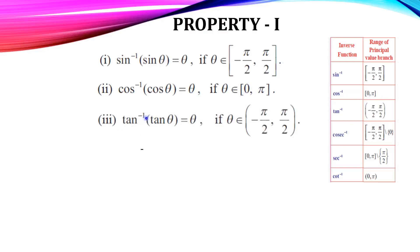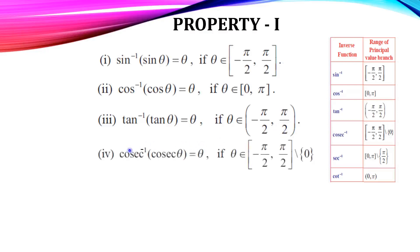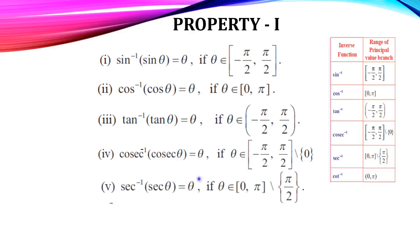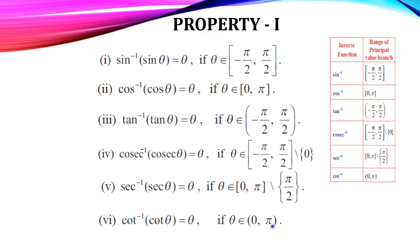For tan inverse of tan θ = θ, the range of tan inverse is open interval (−π/2, π/2). For cosecant inverse of cosecant θ = θ, this θ must lie in [−π/2, π/2]. For secant inverse of secant θ = θ, this θ must belong to [0, π] except π/2. For cot inverse of cot θ = θ, the range is open interval (0, π), so θ must lie in (0, π).